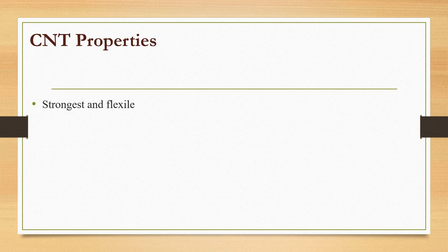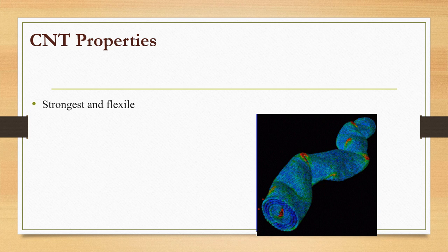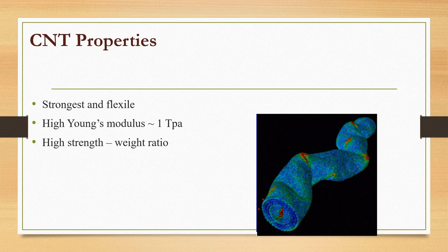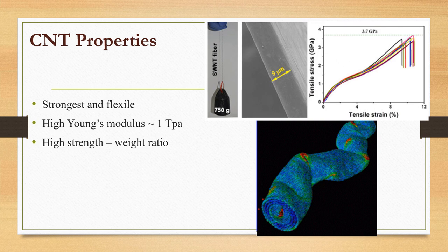General properties of carbon nanotubes: CNTs are the strongest and most flexible molecular material because of carbon-carbon covalent bonding and seamless hexagonal network architecture. Young's modulus is over 1 terapascal. The strength to weight ratio is 500 times greater than aluminium, with maximum strain of 10%, much higher than any other known material.